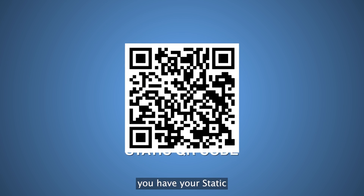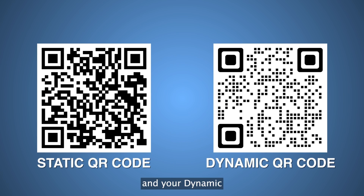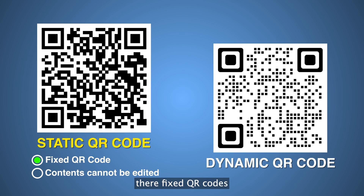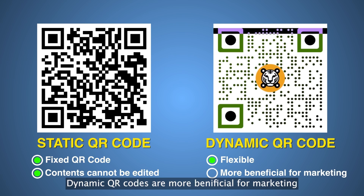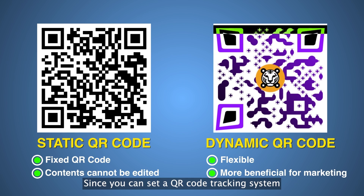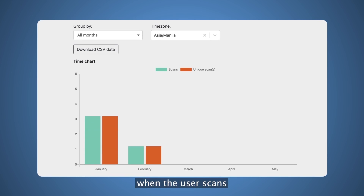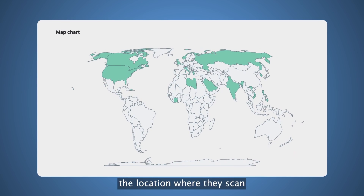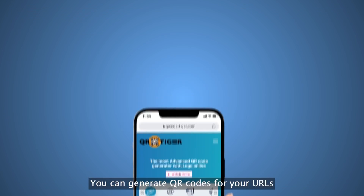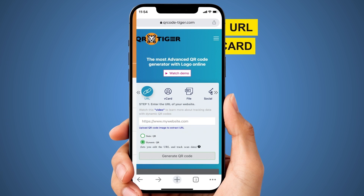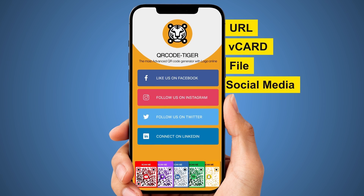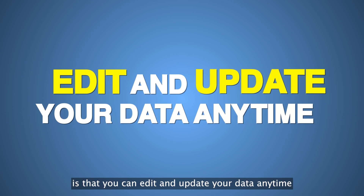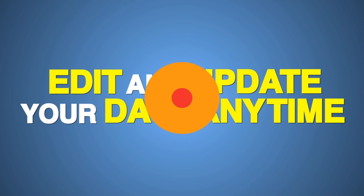There are two types of QR codes: static and dynamic. Static QR codes are fixed and their contents cannot be edited. Dynamic QR codes, on the other hand, are the flexible type. Dynamic QR codes are more beneficial for marketing since you can set up a QR code tracking system to track the number of scans, when the user scans, the location where they scan, and the user's device type. You can generate QR codes for your URLs, business cards, PDF files, social media accounts, and many more. What makes it even better is that you can edit and update your data anytime.